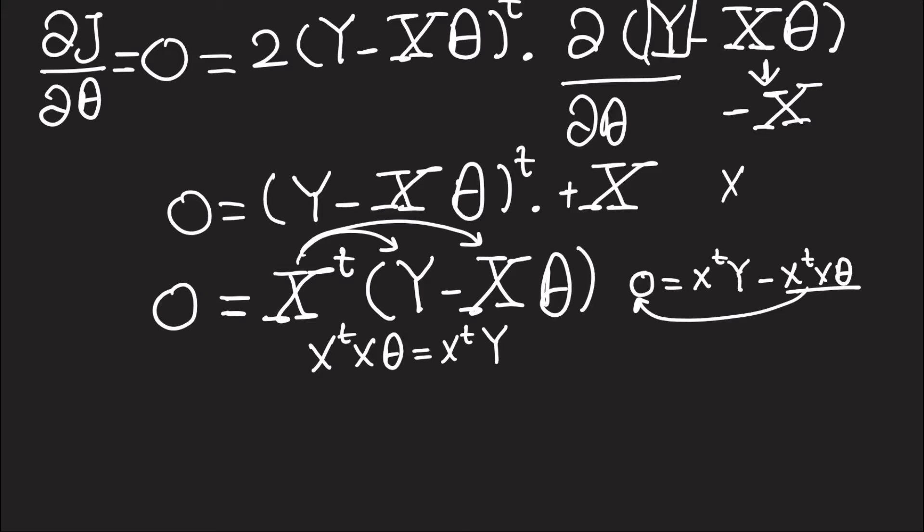In order to get theta is equal to (X transpose X) inverse times X transpose Y. And here this is called the normal equation, which is a closed-form solution for the least squares problem.